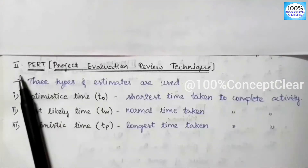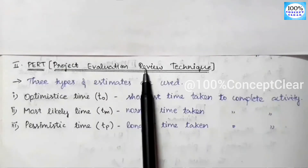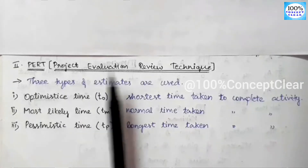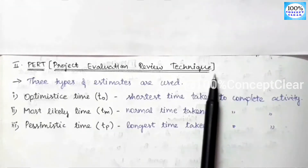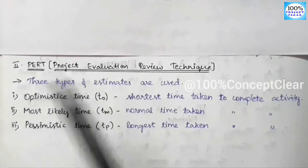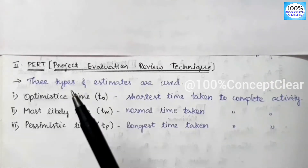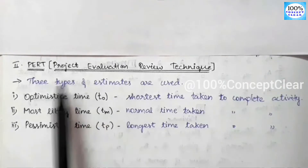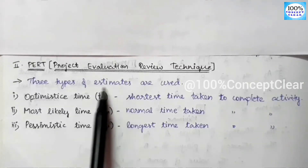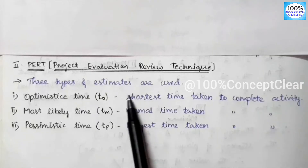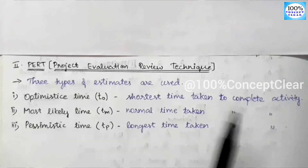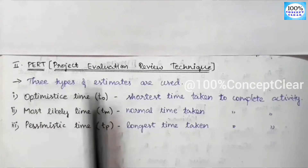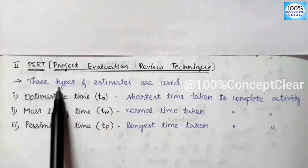Next, we will see the PERT method — Project Evaluation Review Technique. The major difference between CPM and PERT is that in CPM, a single fixed duration is used, while in PERT, we find three types of time estimates. All other methods — Early Start, Early Finish, Late Start, Late Finish — remain the same.